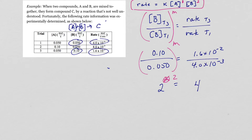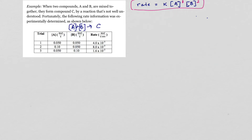That gives us our complete rate law expression. Sometimes you are also asked for the overall reaction order, which is just a quick sum of the exponents. Here we have an exponent of 1 on A and an exponent of 2 on B, so the overall reaction order is 3. This gives a quick idea of what total impact the reactants' concentrations have on the rate.